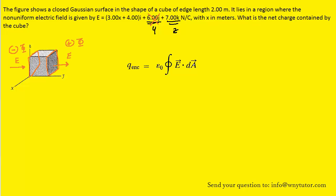The same argument applies for the z-direction. There are two faces in the z-direction: the top and bottom of the cube. The electric field value is positive 7, so we have an electric field line pointing up in the positive z-direction, giving negative electric flux on the bottom of the cube and positive electric flux out of the top. The magnitudes of those fluxes are the same, so the overall flux in the z-direction is also zero — we disregard that as well.